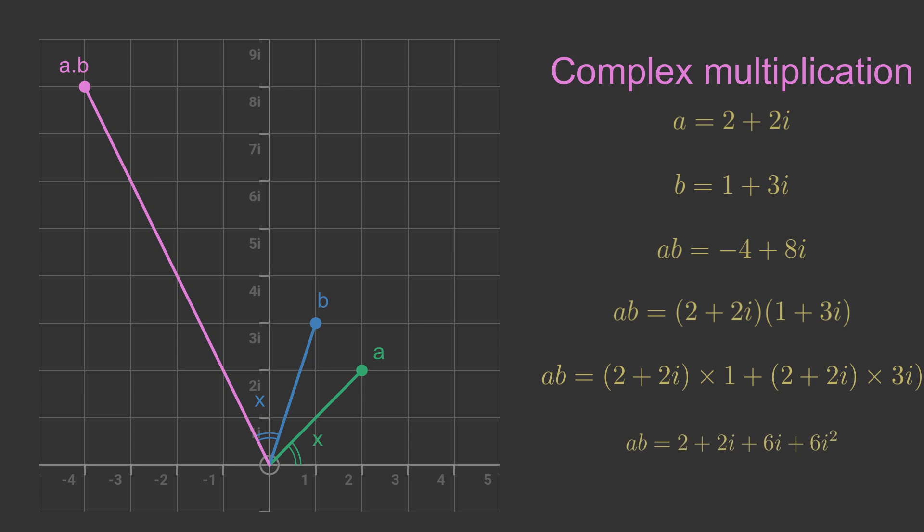This gives 4 terms: 2 plus 2i plus 6i plus 6i squared. Since i squared is minus 1, this simplifies to minus 4 plus 8i. But why would the two angles be the same?